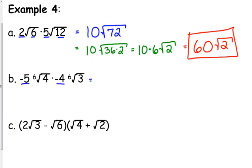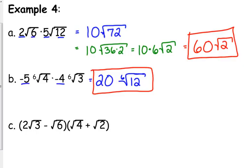Multiply the coefficients in front: negative 5 times negative 4 gives us positive 20. This is the 6th root, and 4 times 3 is 12. The first perfect 6th power other than 1 is 2 to the 6th, which is 64. So 12 is definitely not divisible by 64. This was a one-step process — you didn't have to simplify the root in the end.